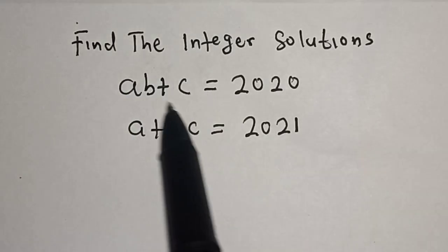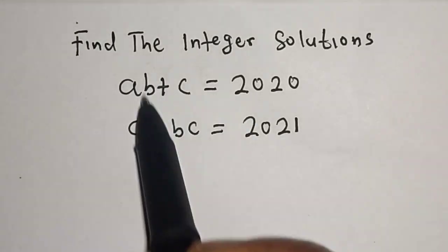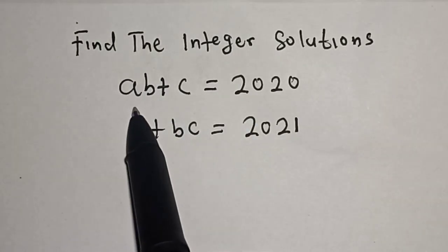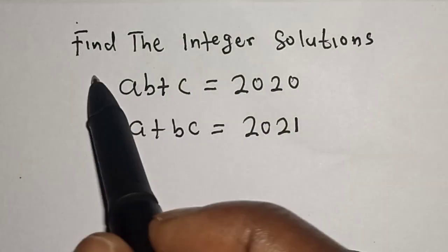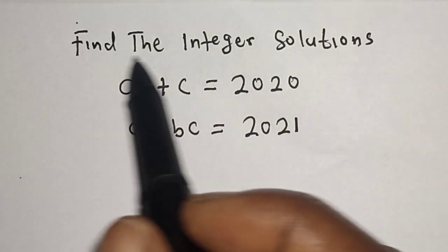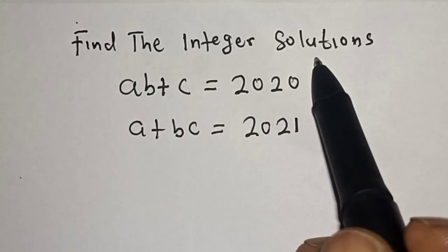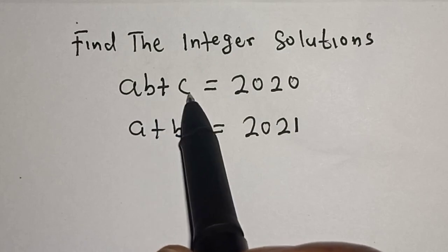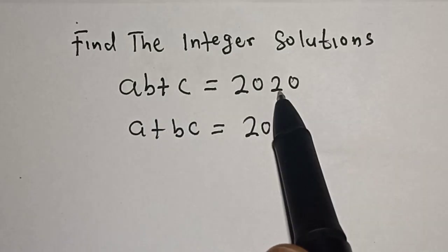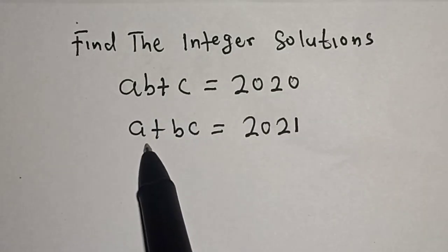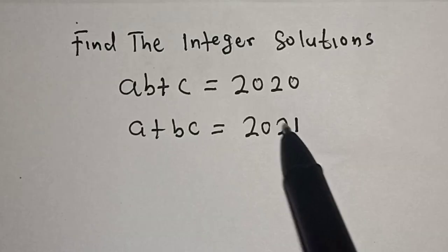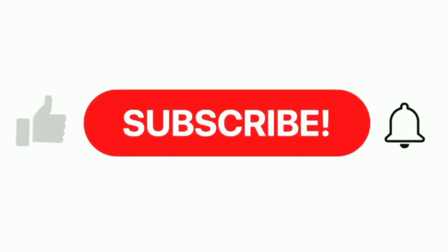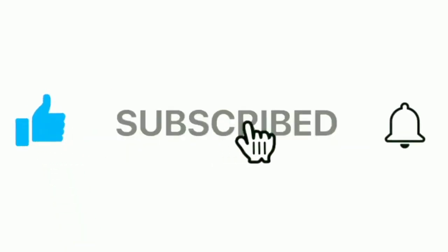Hello, welcome to Magisk. In this class we want to find the value of A, B, and C from this given equation. The question says: find the integer solutions — A(B + C) = 2020 and A + BC = 2021. Please like, share, comment, and subscribe.